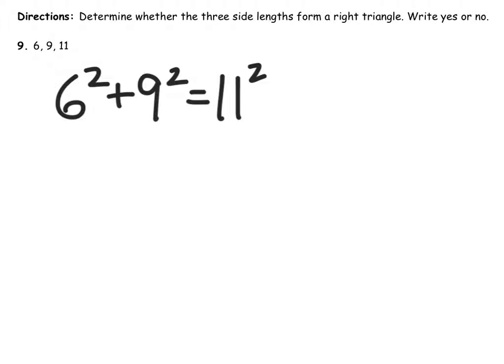So let's write this one out. Also, we have to recognize that 11 is the biggest of the three numbers. Therefore, it is the hypotenuse if it is a right triangle.